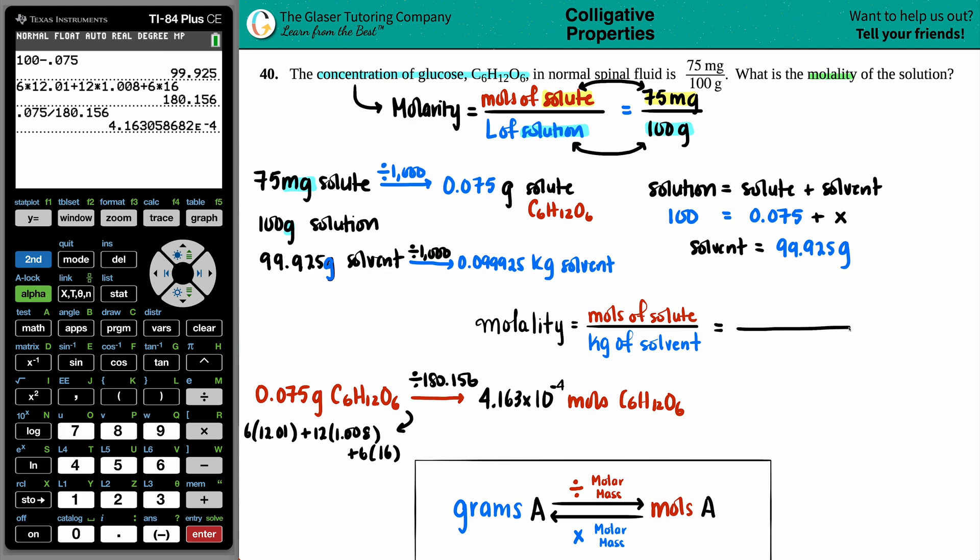Molality equals the moles of the solute divided by the kilograms of the solvent. The moles was the 4.163 times 10 to the negative fourth, divided by the kilograms of the solvent, 0.099925.